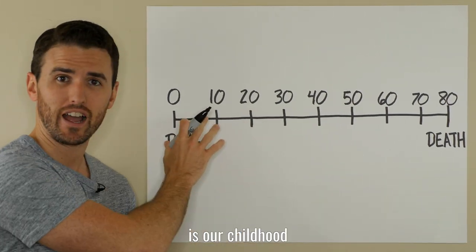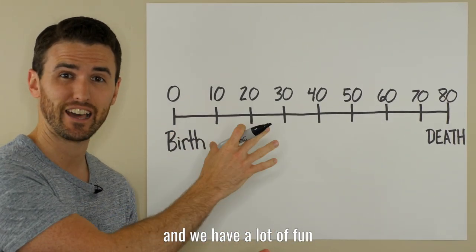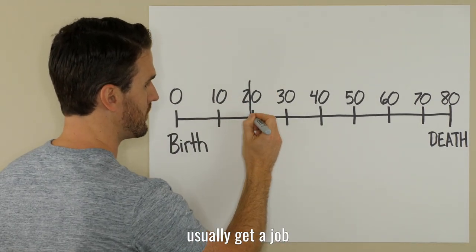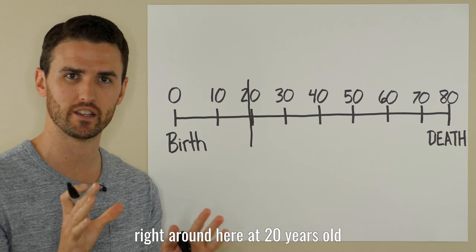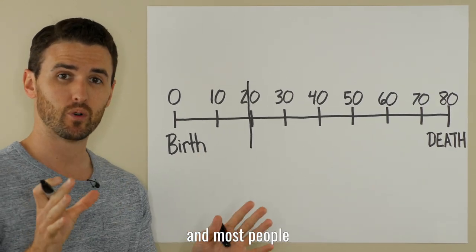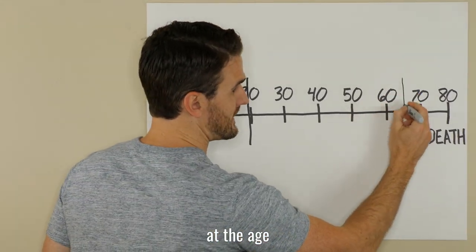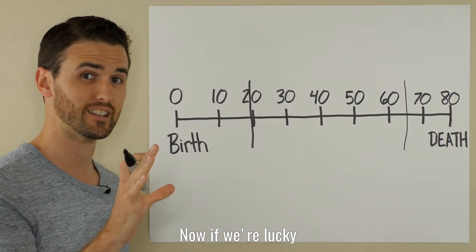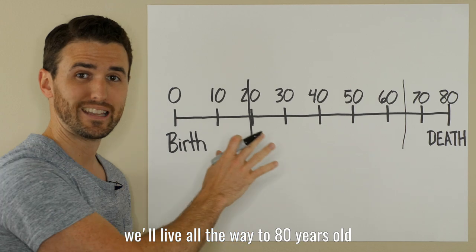See this right here is our childhood and our teenage years and we have a lot of fun. And most of us usually get a job right around here at 20 years old. And most people will retire at the age of 65. Now, if we're lucky, we'll live all the way to 80 years old.